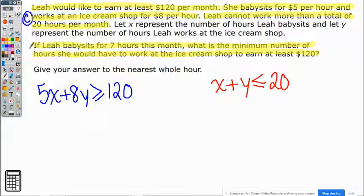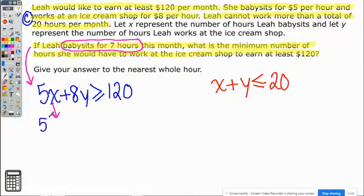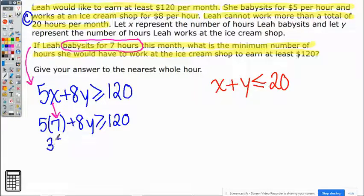The equation we're going to use is this one for now. They said that she wants to babysit for 7 hours this month, and the babysitting was represented by x, so it's going to be 5 times 7, and we're solving for the ice cream shop, which is y. Five times 7 is 35, and then I'm going to subtract 35 on both sides.